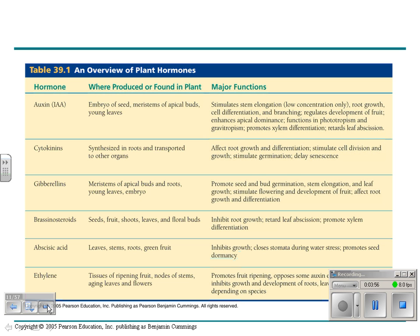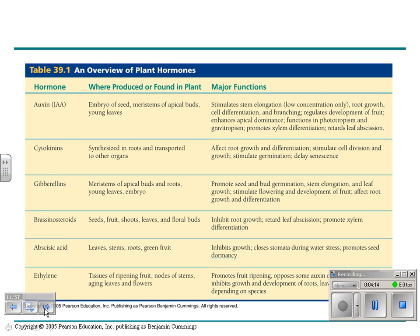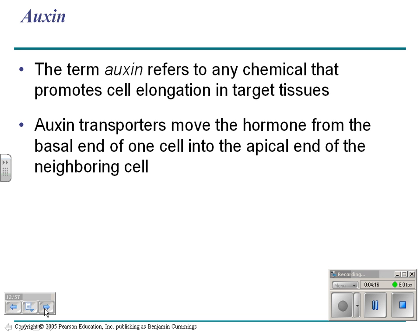There are six kinds of plant hormones. We're going to pay special attention to auxin and ethylene, which has real importance to you and your house. Auxin refers to any chemical that promotes cell elongation in target tissues. Remember, a hormone works on a target tissue — in humans, insulin comes from the pancreas but works on all cells.